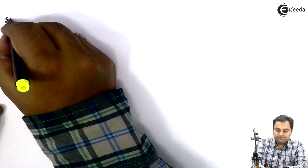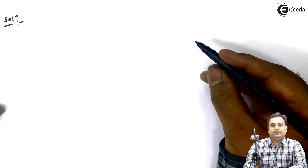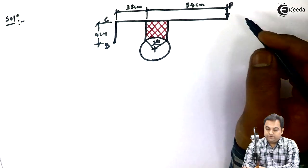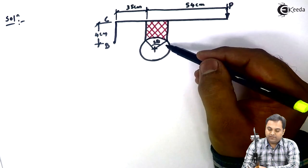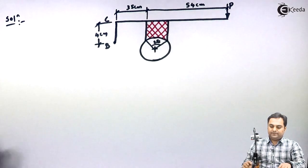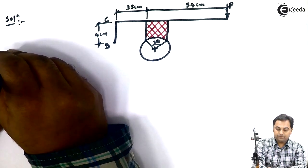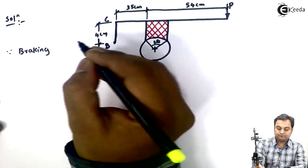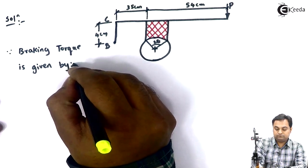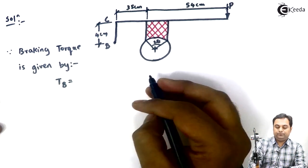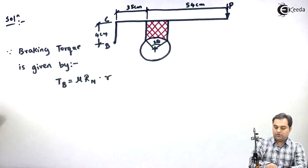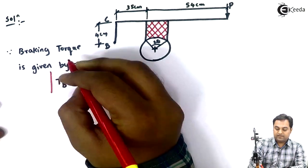Now I will draw the diagram given in the problem. This is the diagram of a single block brake. Since we have to calculate the braking torque, the braking torque is given by T_B = μ · R_N · R. I'll keep this as equation number one.